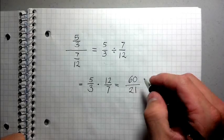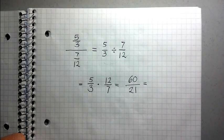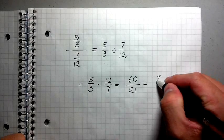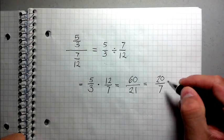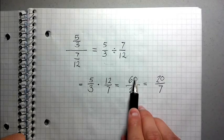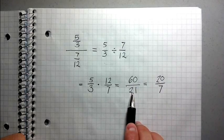Now this is the answer. If I were to reduce this using equivalent fractions, then I would just get 20 over seven because I divided three into the top and I divided three into the bottom. 60 over three is 20 and 21 over three is seven.